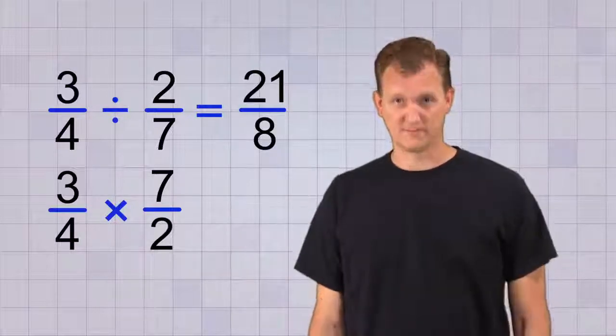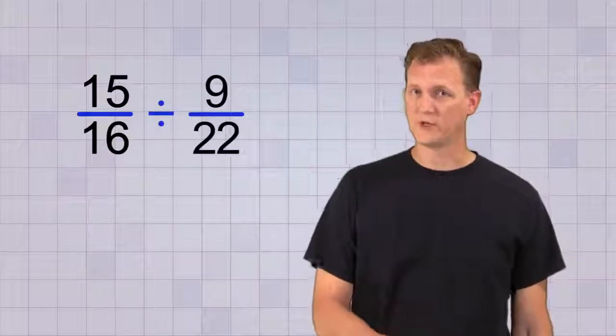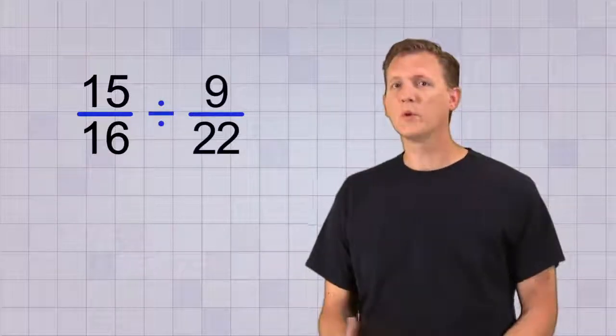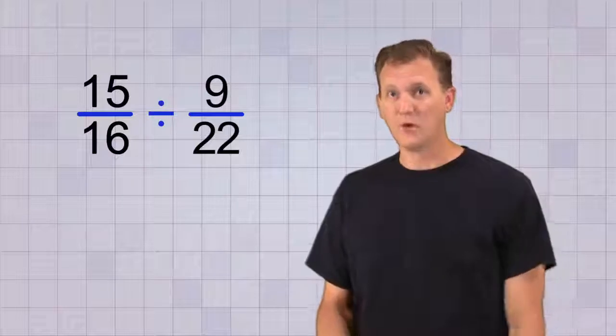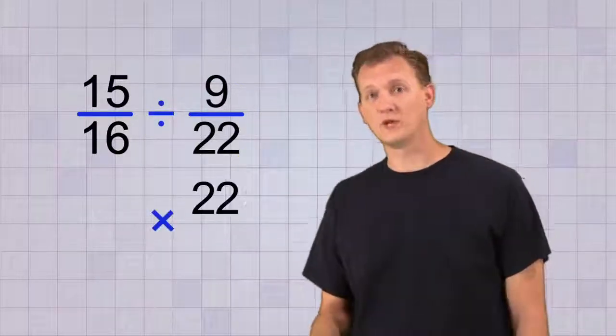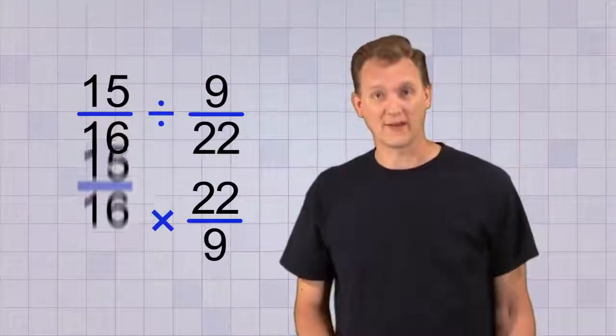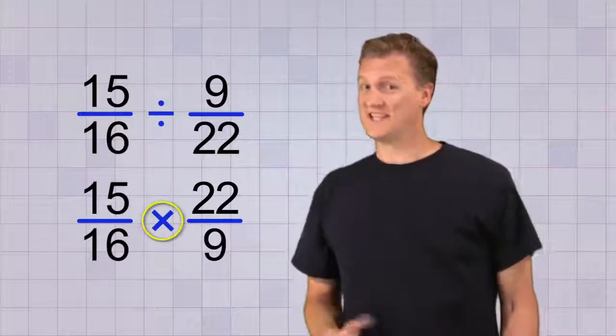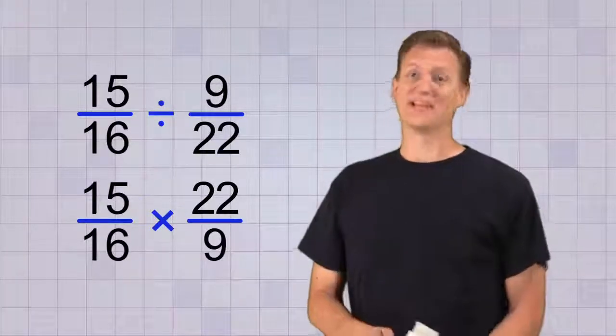Let's try 15 over 16 divided by 9 over 22. Again, the first thing we want to do is rewrite our problem. We'll change the divided by 9 over 22 into times 22 over 9. Now all we have to do is multiply. But since these numbers are kind of big, I'm going to use my calculator to help.